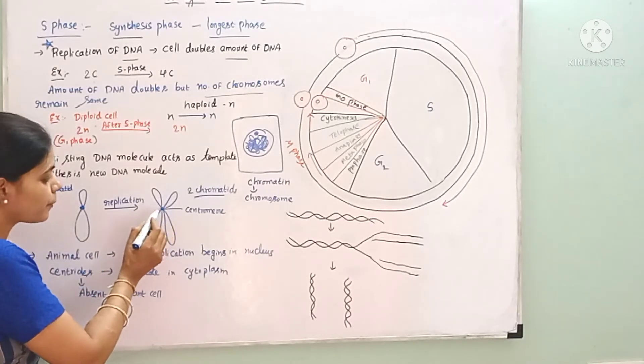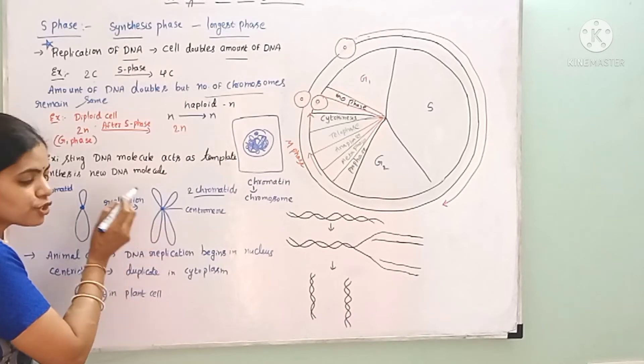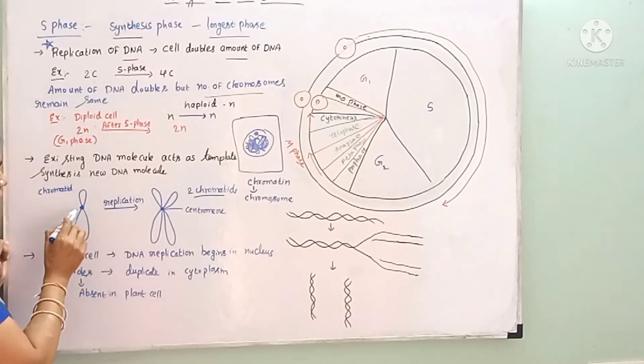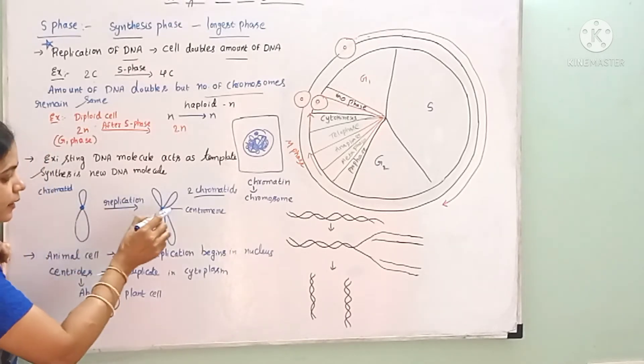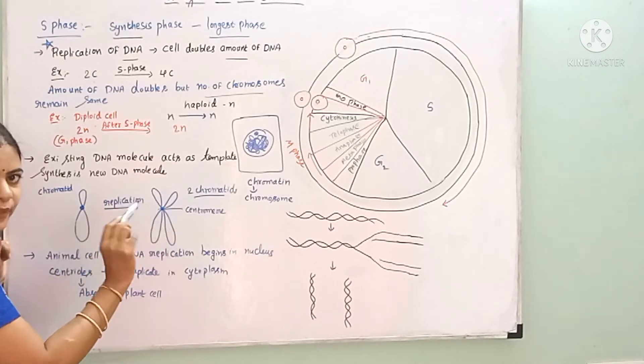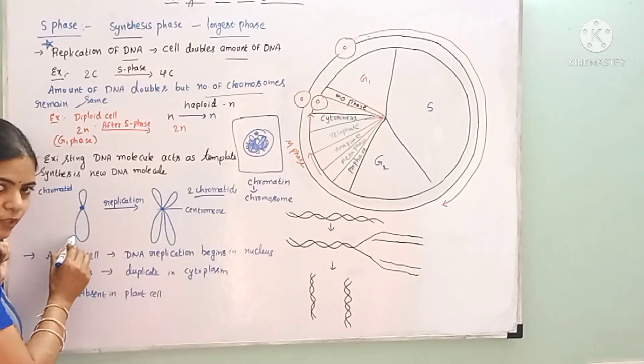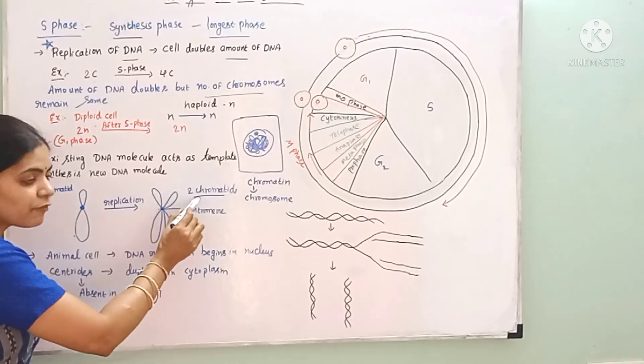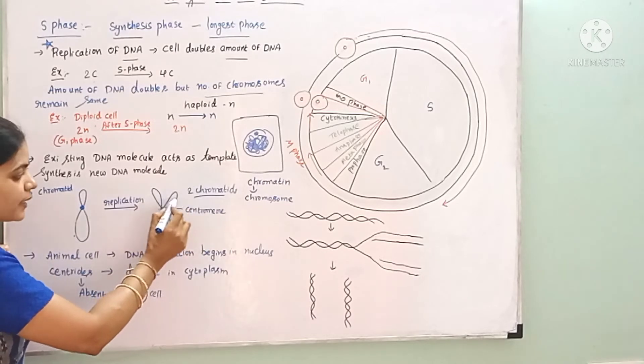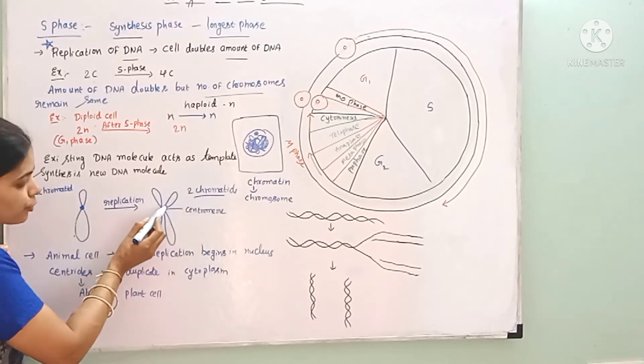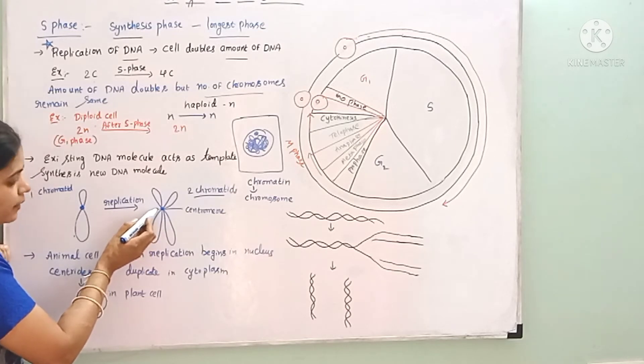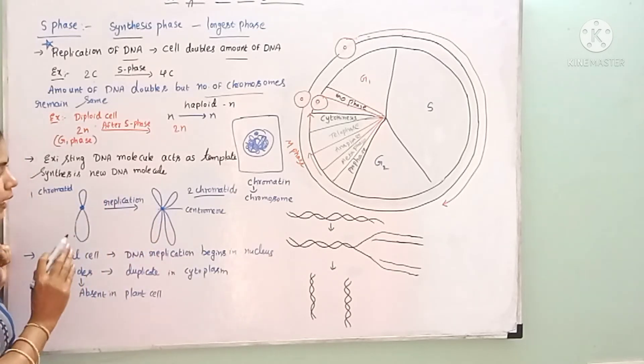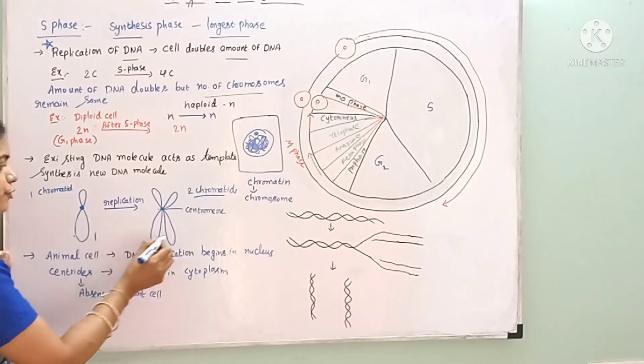These two sister chromatids are joined at the centromere region. The number of centromeres remains the same, so it is still one chromosome. The number of chromatids changes from one to two, but the chromosome number doesn't change. The amount of DNA increases, but chromosome number remains the same.